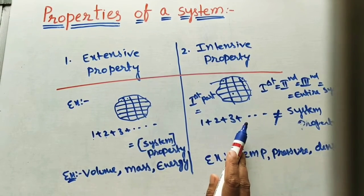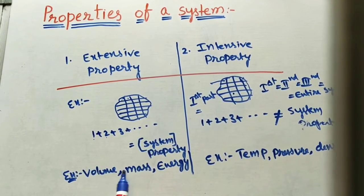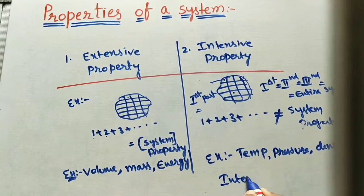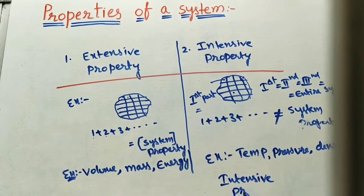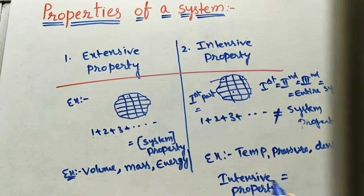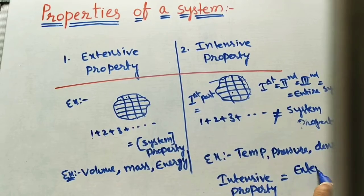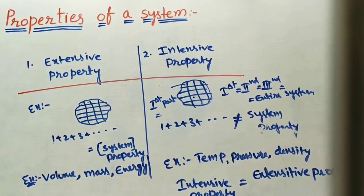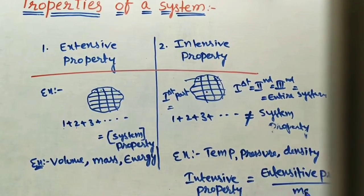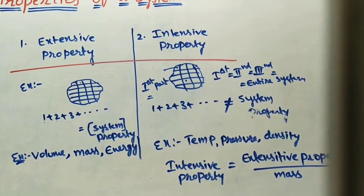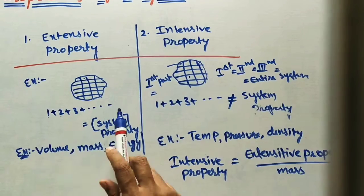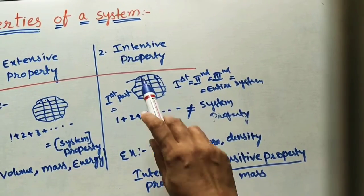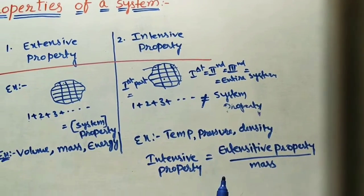We can use one formula here. By using extensive properties and removing the mass factor, we get intensive property. So: intensive property = extensive property divided by mass. Whatever extensive properties depend on mass — if we cancel out that mass, it becomes an intensive property, which means it will not depend on mass.